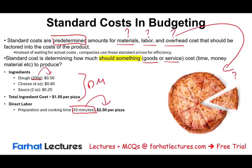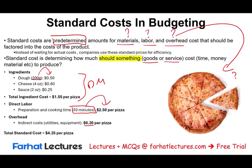What else do we need to factor? You guessed it — the overhead. We'll need to incur some sort of overhead allocation, a predetermined allocation rate. We determined that it's $0.30 per pizza — that includes utilities, equipment, and all overhead costs. So we know the pizza should cost us $4.35. We say these are the standard costs. Is this going to be exactly that much? No. But it's a starting point, assuming everything works as expected. This is the standard — the pizza should cost us $4.35.